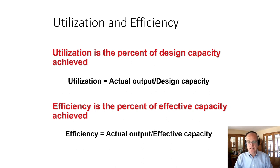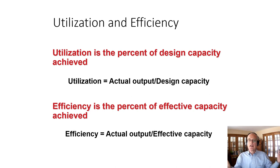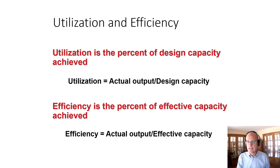Efficiency is the percentage of effective capacity achieved — actual output over effective capacity. Utilization is the proportion of total design capacity you're using. Efficiency recognizes that you may not be right at design capacity, and it measures your ability to manage within your effective capacity.